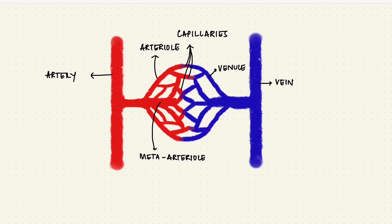At the point of origin of each capillary from the arterioles is a pre-capillary sphincter, which controls the blood flow through the capillary. True capillaries do not have smooth muscle in their wall, versus arterioles which do.